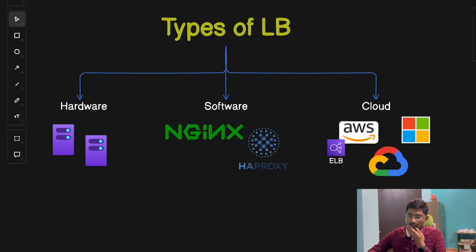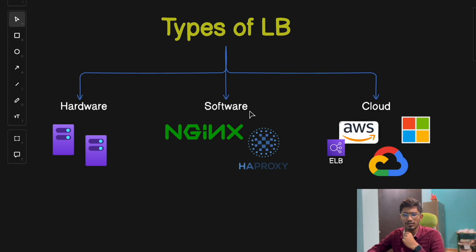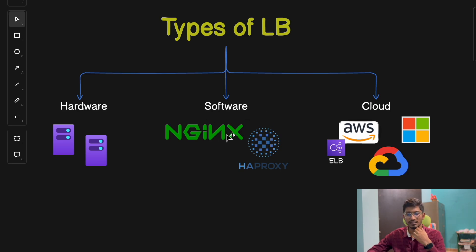If you're a startup and don't want the hassle of managing physical devices, then a hardware-based load balancer might not be suitable for you. That's where the second type comes in — software-based load balancers. These are applications you can install on your servers to manage traffic. If you have an EC2 machine, an AWS/Azure VM, you can install these software packages and that VM itself will act as a load balancer. Software-based load balancers are more flexible, easier to configure, and work well in virtualized environments.